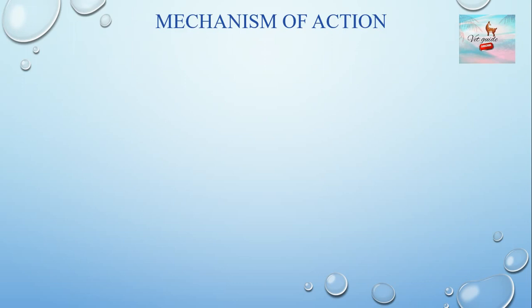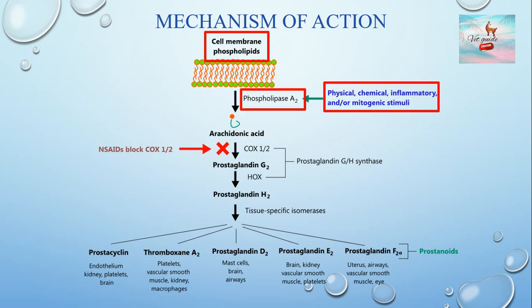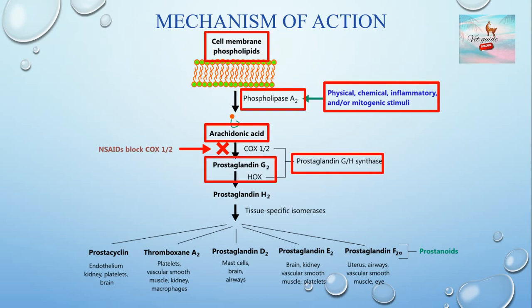Now we will see the mechanism of action of NSAIDs. In a cell, inflammation is first initiated by physical, chemical, mitogenic, and other inflammatory stimuli. These stimuli activate the enzyme phospholipase A2. Phospholipase A2 causes the release of arachidonic acid, a 20-carbon fatty acid, from the cell membrane.